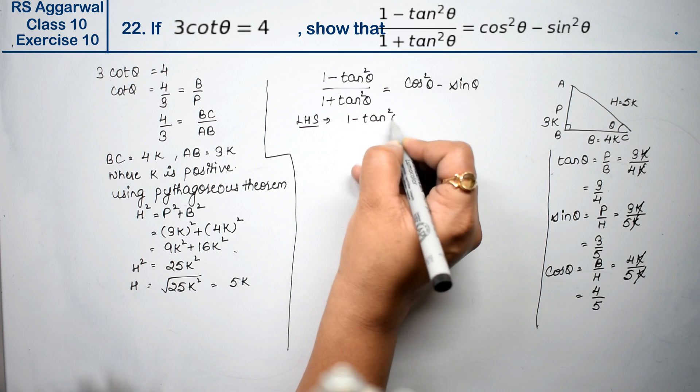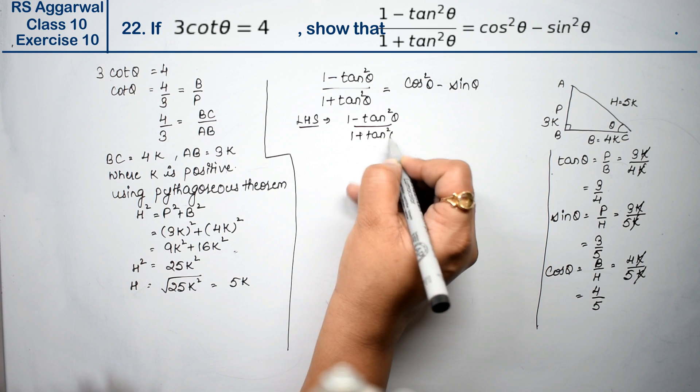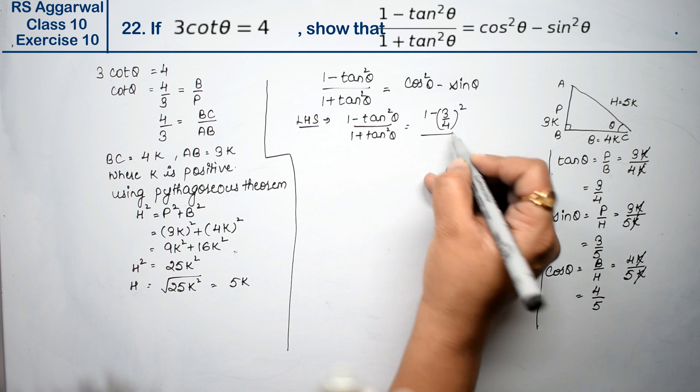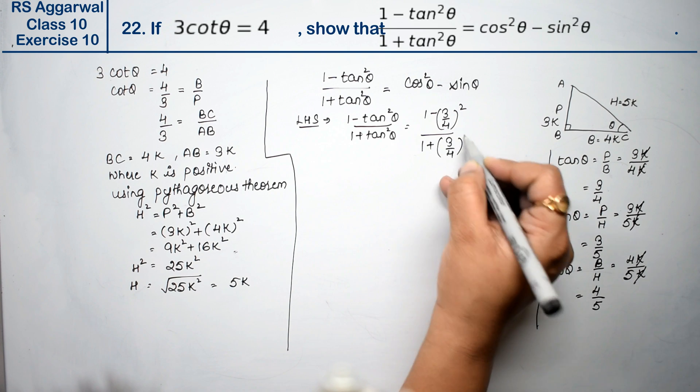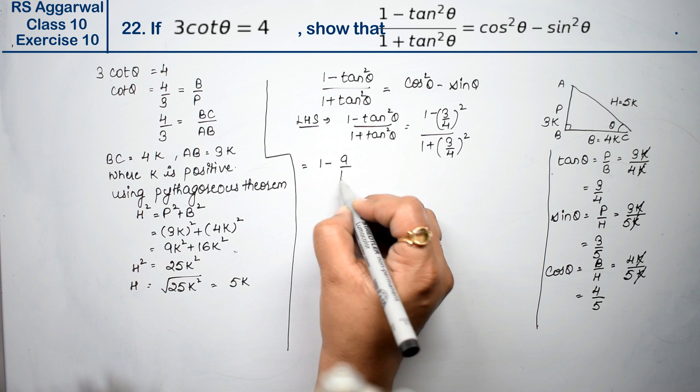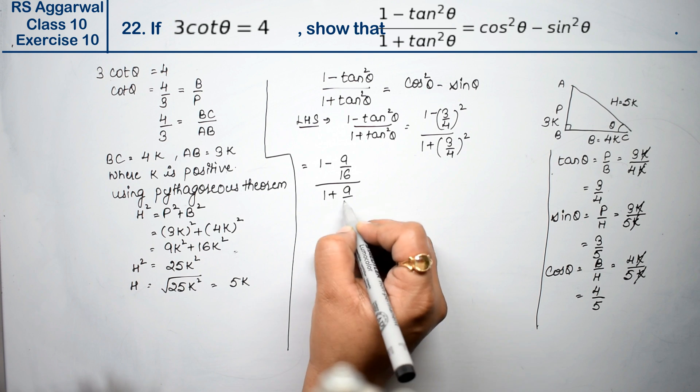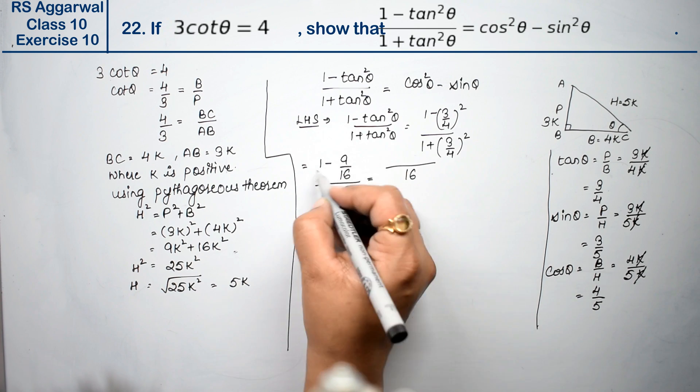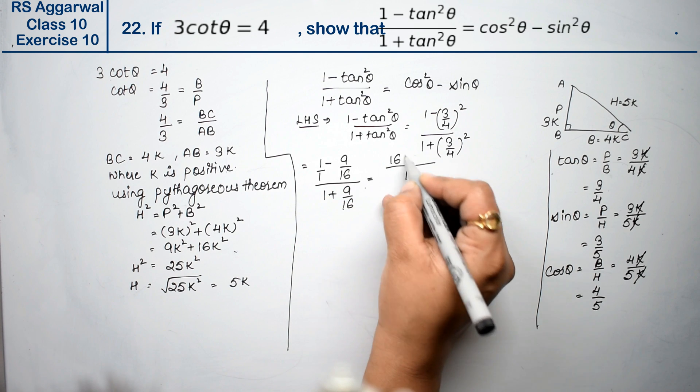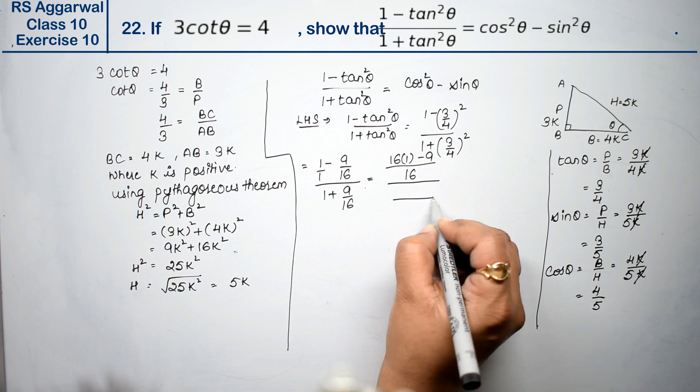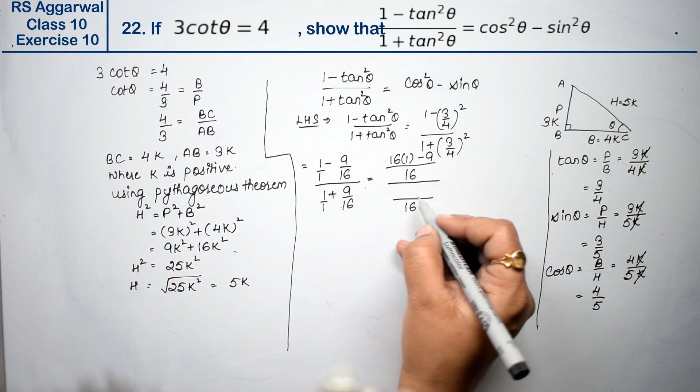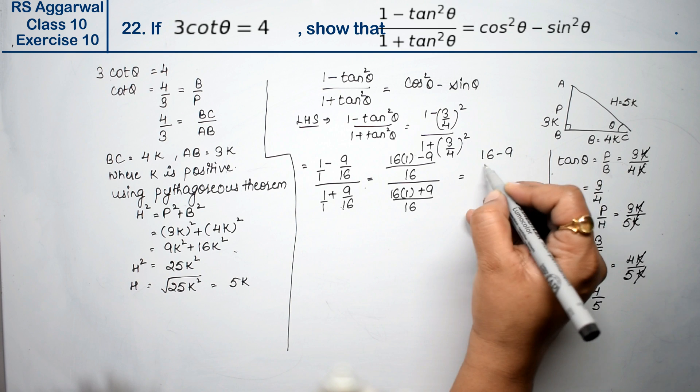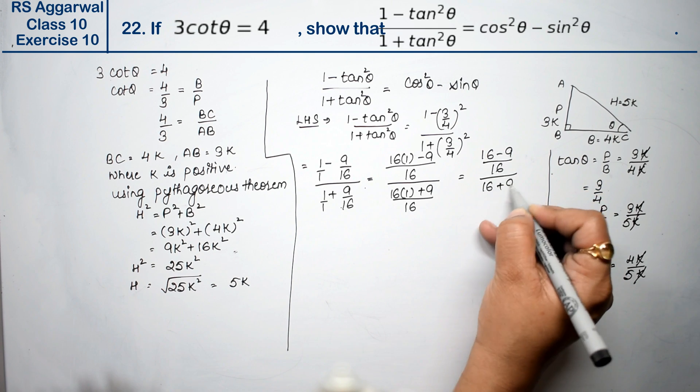Left-hand side is (1 - tan²θ)/(1 + tan²θ). So 1 minus tan θ is 3 upon 4 whole square, upon 1 plus 3 upon 4 whole square. This is 1 minus 9 upon 16, upon 1 plus 9 upon 16. Taking LCM 16, we get (16 - 9) upon 16, upon (16 + 9) upon 16.